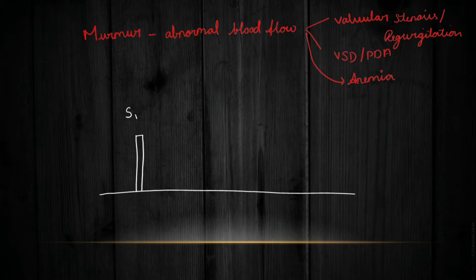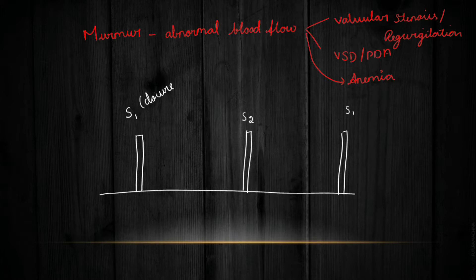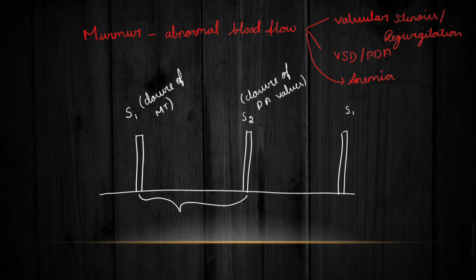Before entering into detail, let me give a basic explanation. S1 and S2 are the normal heart sounds. S1 is due to the closure of the mitral and tricuspid valve. S2 is because of the closure of the pulmonary and aortic valves. The period between S1 and S2 indicates ventricular systole, where the ventricle is in a contraction state, and between S2 and S1 is the diastolic phase — ventricular relaxation.